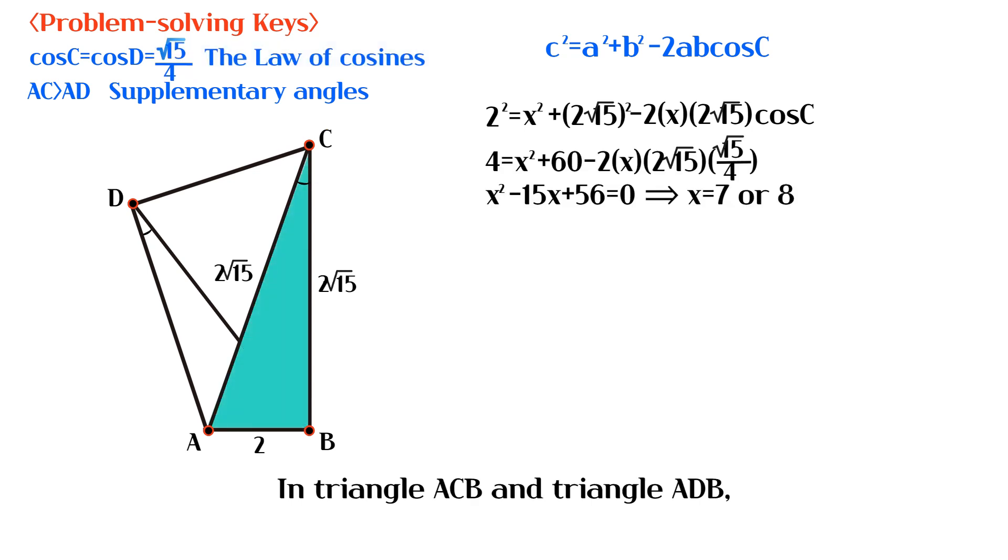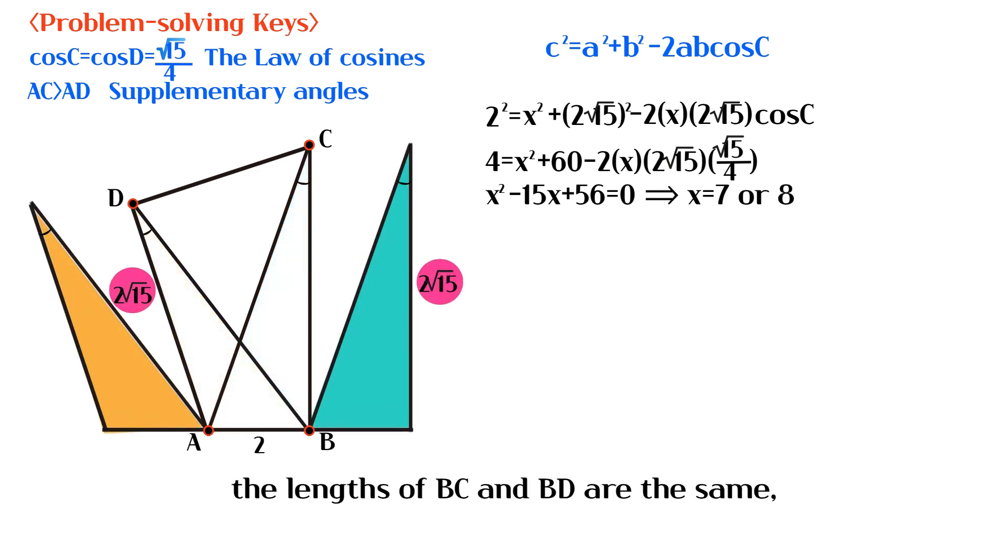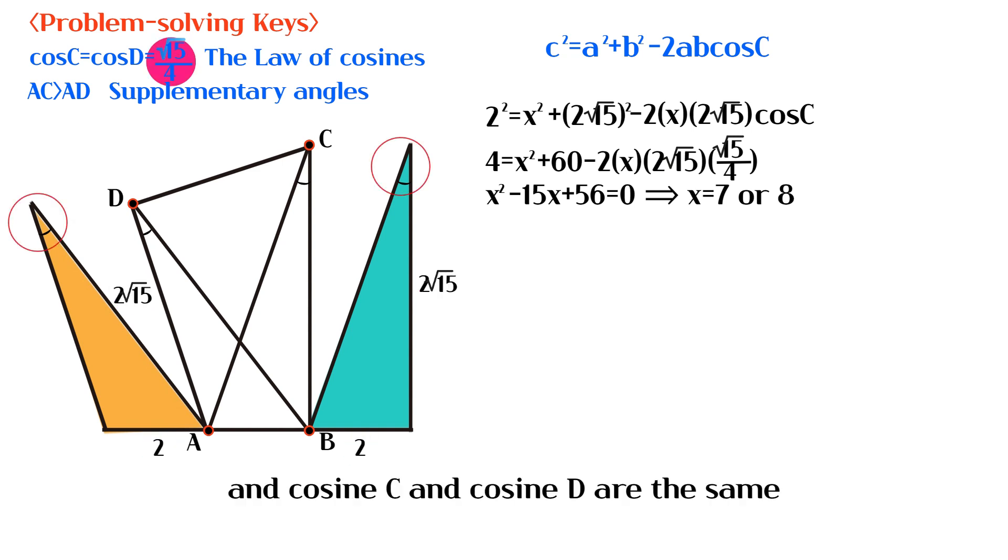In triangle ACB and triangle ADB, the lengths of BC and BD are the same. AB is a common side, and cosine C and cosine D are the same. And it is given that AC is longer than AD.